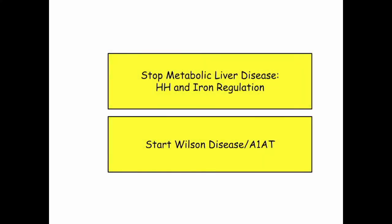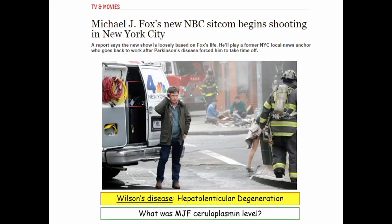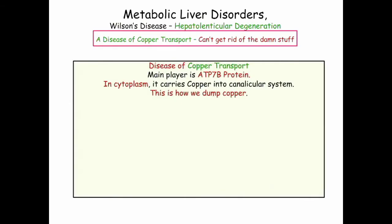That's it on hemochromatosis. We can go quickly through the next two: Wilson's disease and alpha-1. So Wilson's disease — think Michael Fox with Parkinson's disease. Wilson's disease and Parkinson's — hepatolenticular degeneration. They like this because they can link the liver and the brain. Whereas in hemochromatosis we couldn't sense the iron, in Wilson's disease we can't get rid of copper.